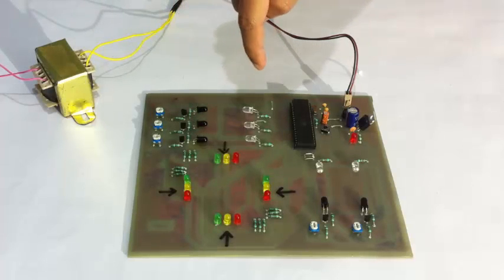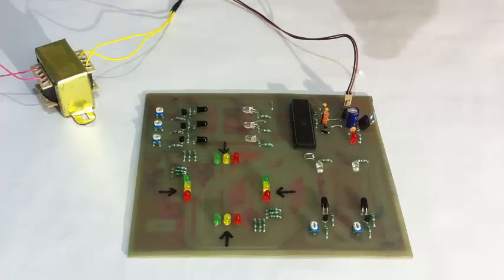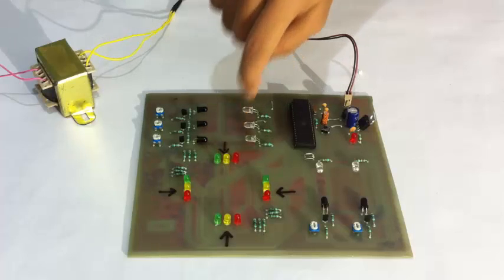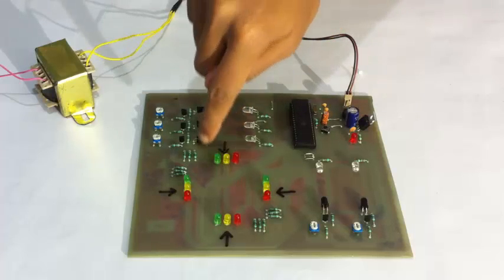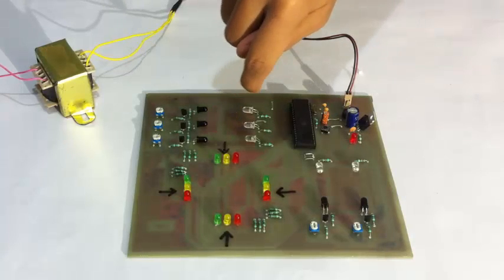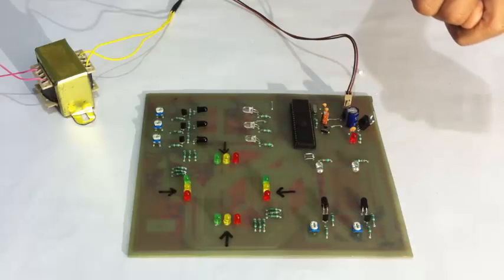These are the IR transmitters and receivers here and these LEDs, colored LEDs are used to demonstrate as green, yellow and red signal at particular post. We would be monitoring the traffic at this one and this way here.